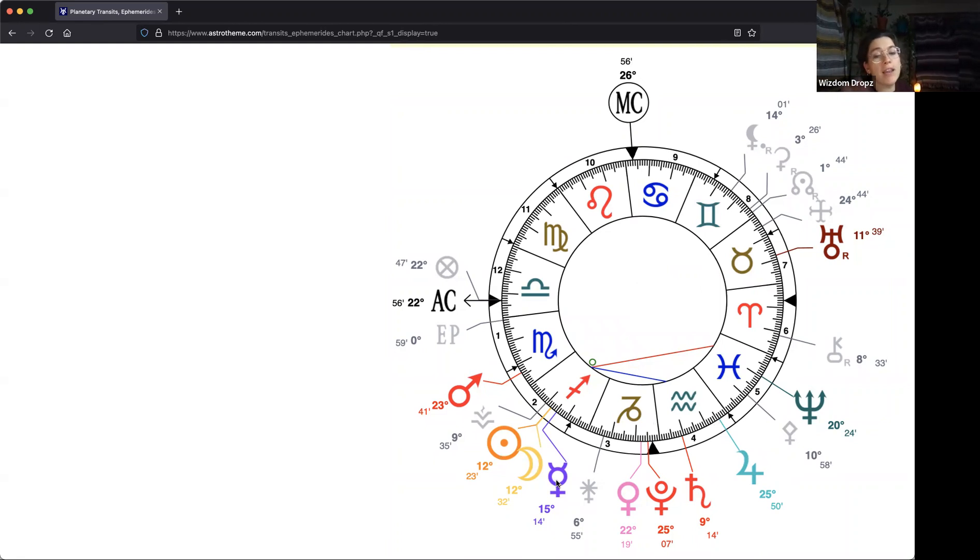In this chart you'll see Mercury at 15 degrees of Sagittarius is in a square, that's the red line, with Neptune. This is a 90 degree based relationship, a five degree orb at this time, which says there could be some mental fog just as much as there could be some deception. Do not be deceived.